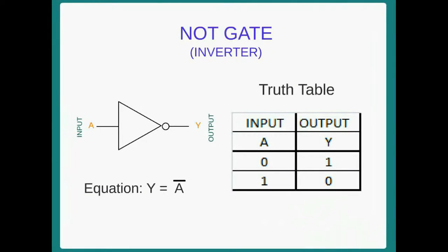Now we will discuss about NOT gate. Only one input and one output available here. Input is A and output is Y. Here output is the complement of input. That is Y equal to A bar. Truth table: for input 0, output is 1. For input 1, output is 0.